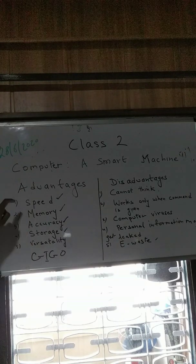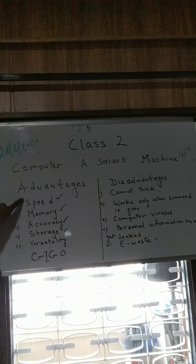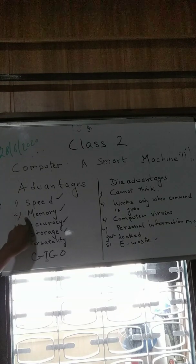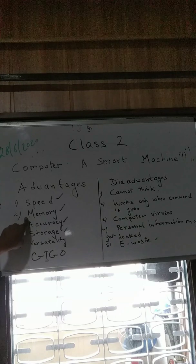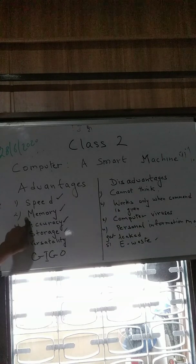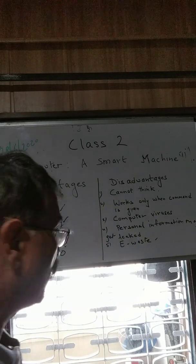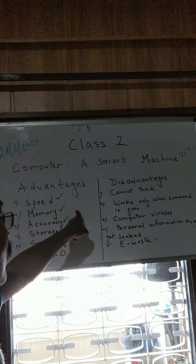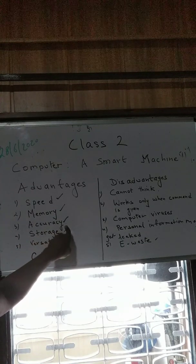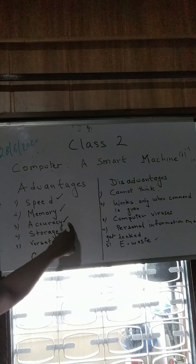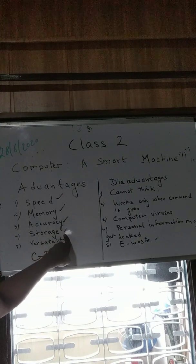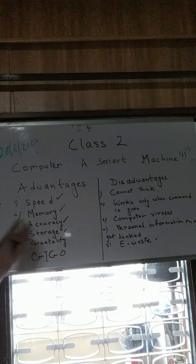The first advantage is speed — the computer works very fast. The second is memory — it has a very large memory. If I ask you to learn two pages, after two or three days you may forget, but a computer never forgets. Whatever is stored in the memory of the computer will remain there. Then accuracy — it is 100% correct and accurate.